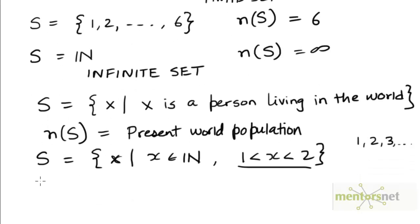The set S is actually an empty set. The number of elements in set S are 0. And we say that the set S is an empty set or a null set. Sometimes it's also called a void set.